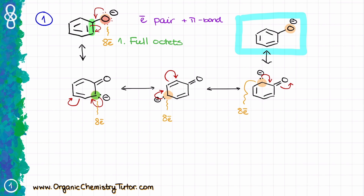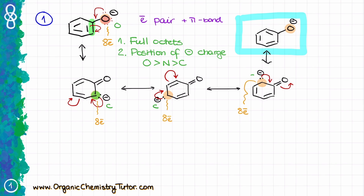So they are more or less stable, and that means that I need to look at the next level of difference — in this case, the position of my negative charge. When it comes to the position of the negative charge, we generally want to make sure that our negative charge is on the more electronegative elements. We want to have negative charge on oxygen more than on nitrogen, or on nitrogen more than on carbon. In this case, I have my negative charge on oxygen versus carbon, carbon, and another carbon, which means that the original structure is going to be my major contributor.